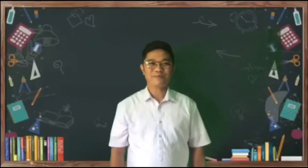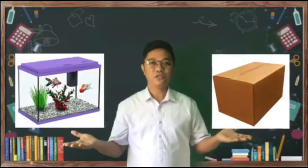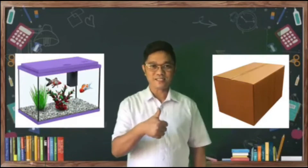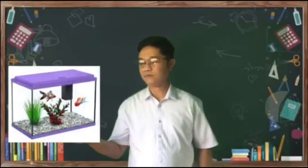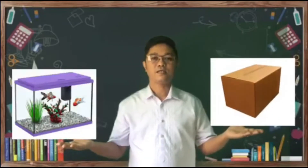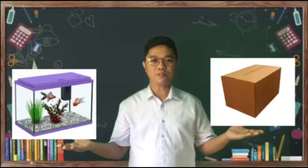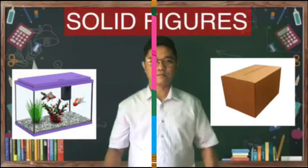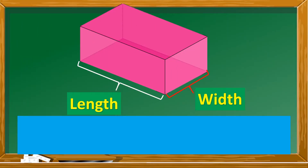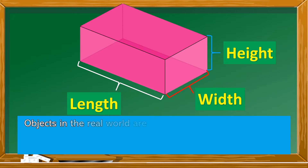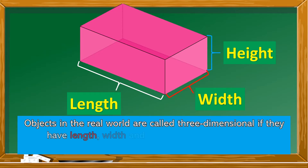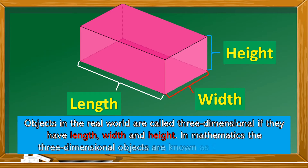Look at these pictures. Do you know what they are? Yes, you're right — this is an aquarium and a box. These objects are examples of solid figures. Objects in the real world are called three-dimensional if they have length, width, and height. In mathematics, three-dimensional objects are known as solid figures.